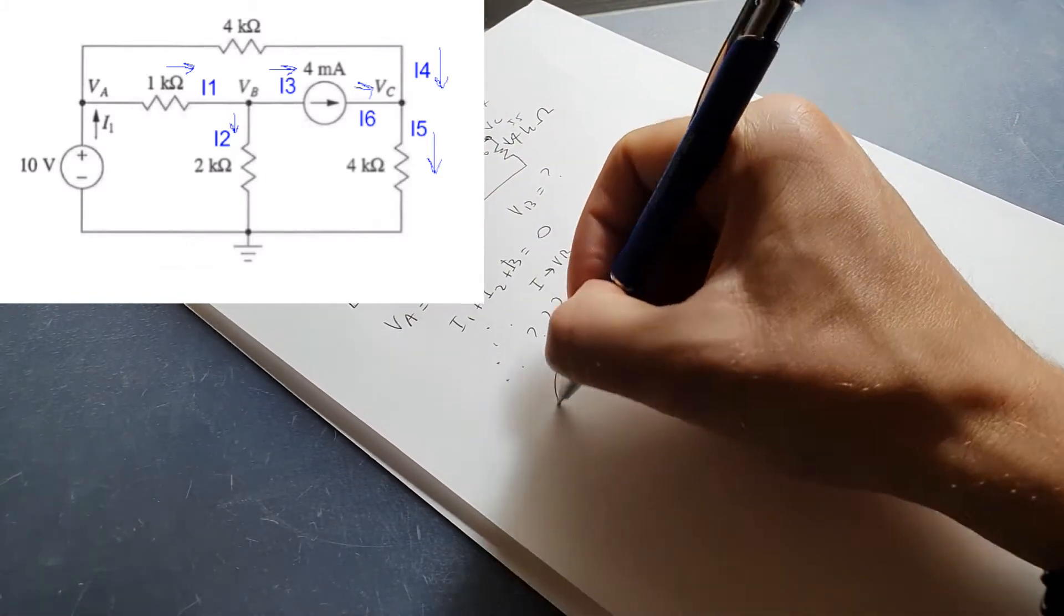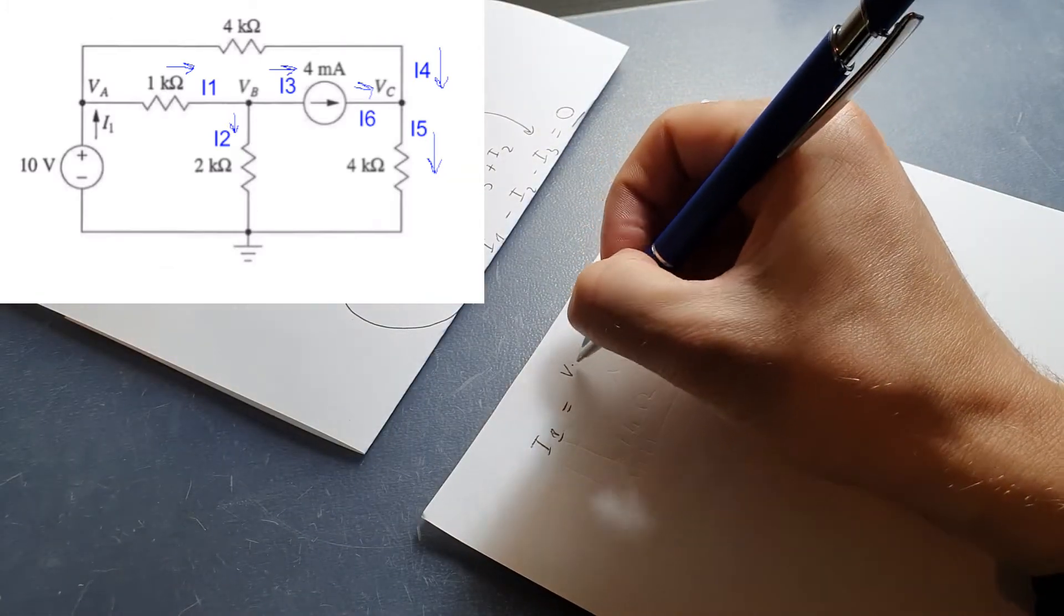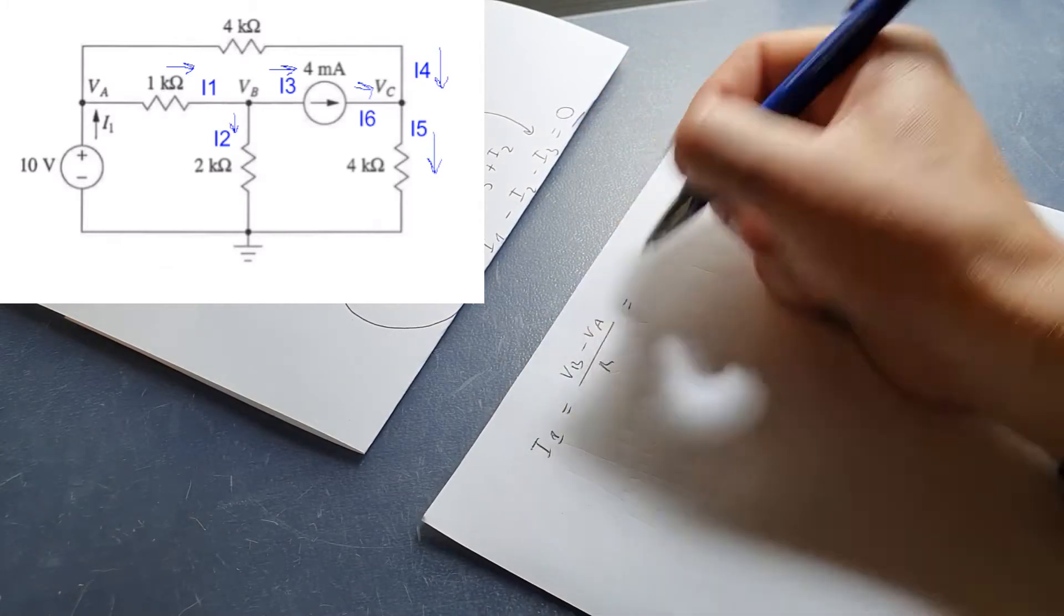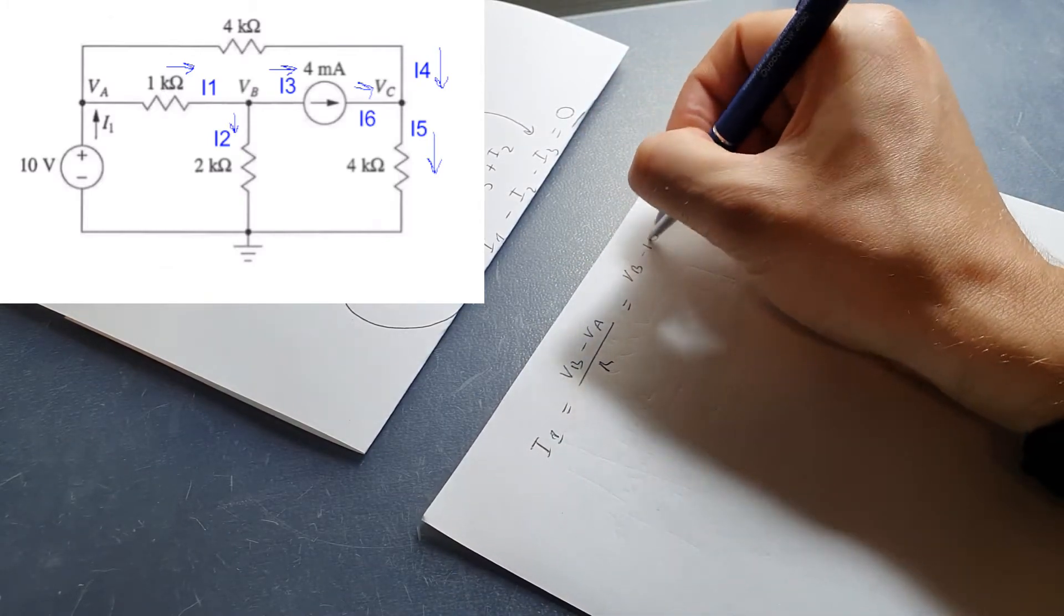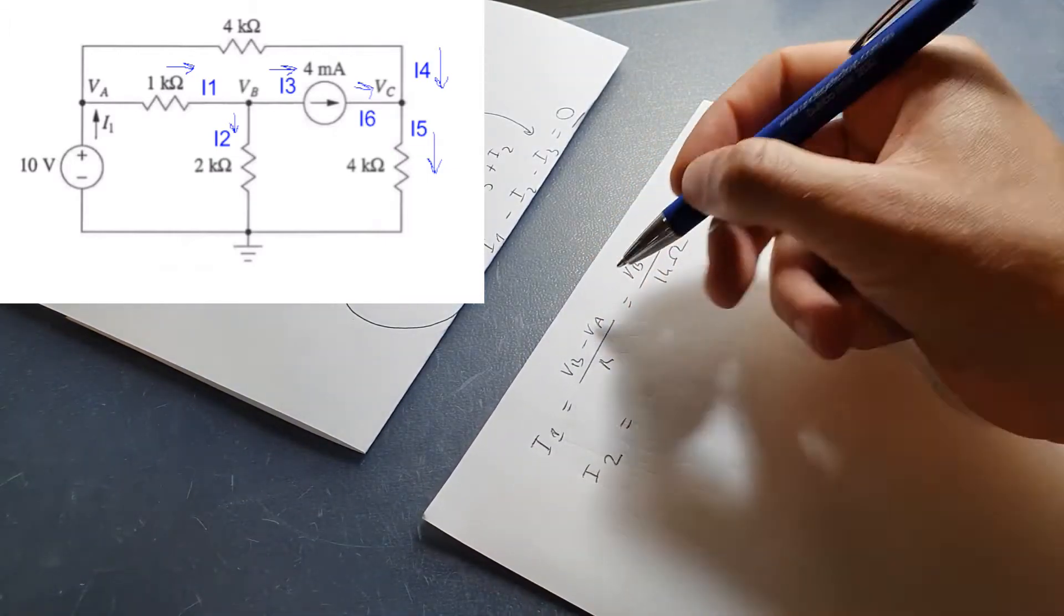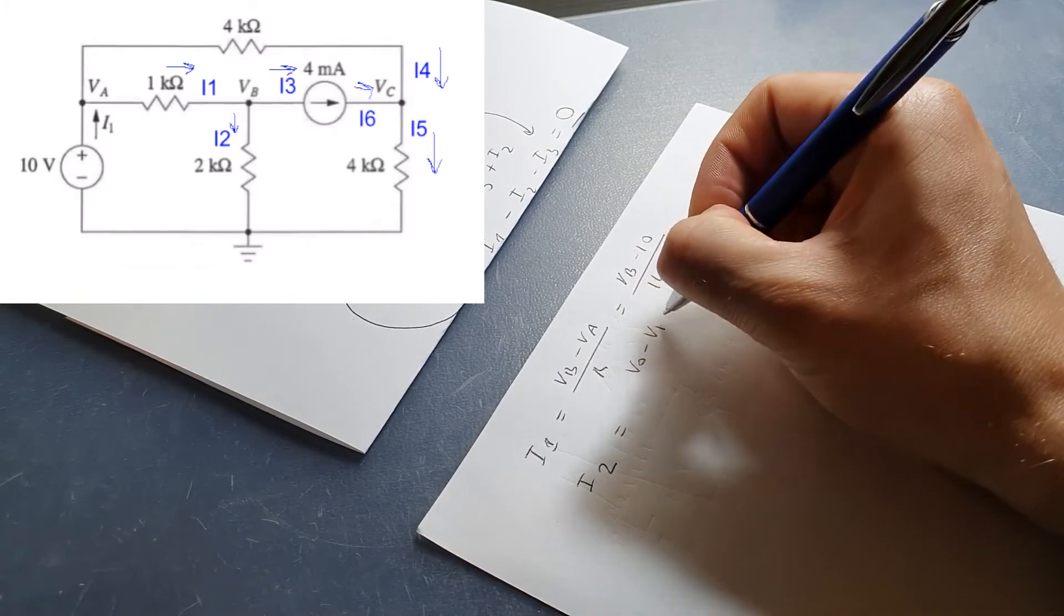Now we just need to apply our Ohm's law in order to derive some more equations in terms of V. We know this: VB minus VA on R for I1. We know that VB is the one we're looking for, and we know VA is 10, and R between those points is 1 kilo Ohm. Now we just need to repeat it for the next equations.